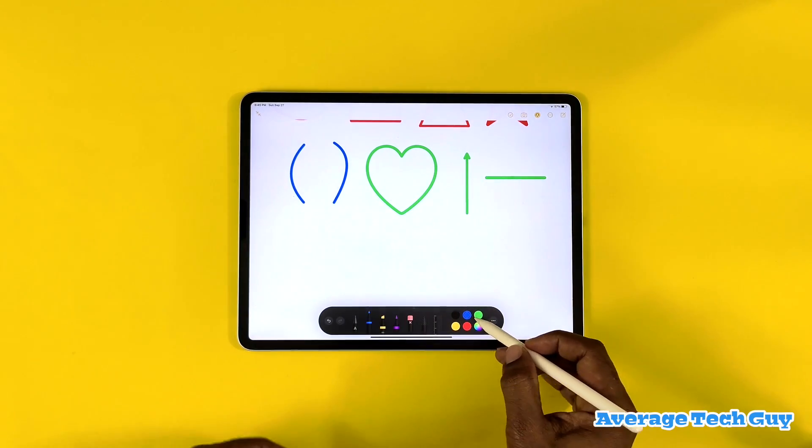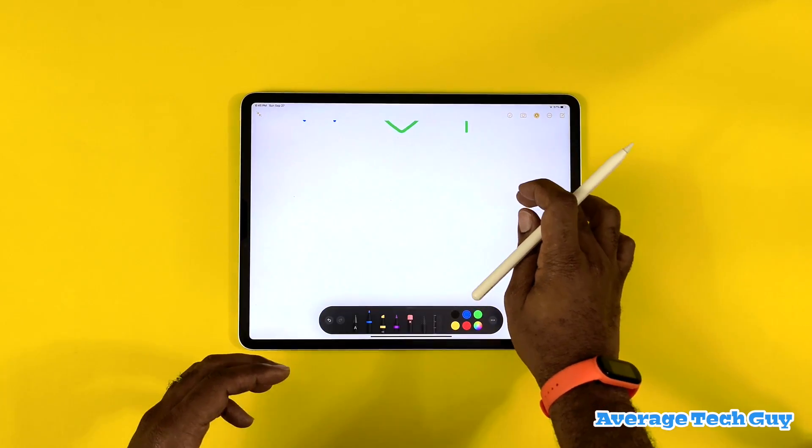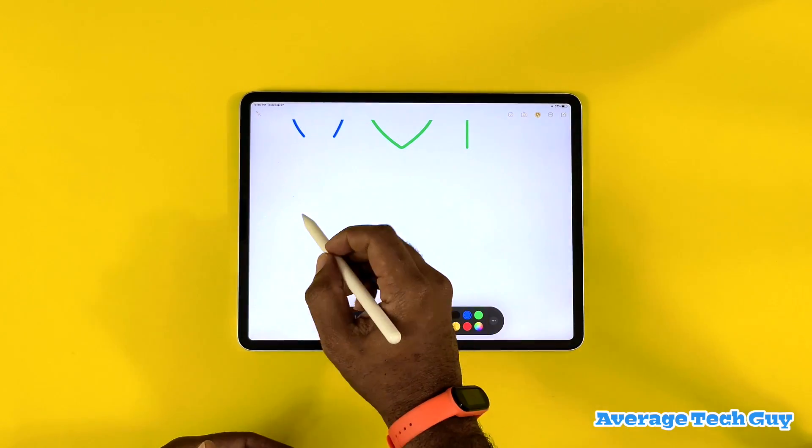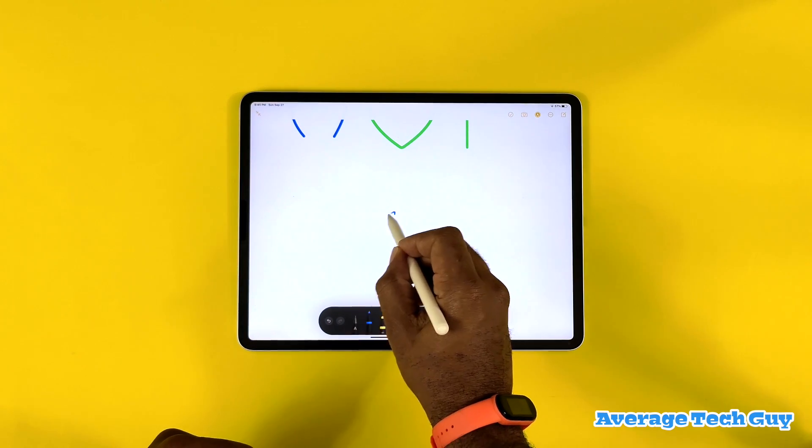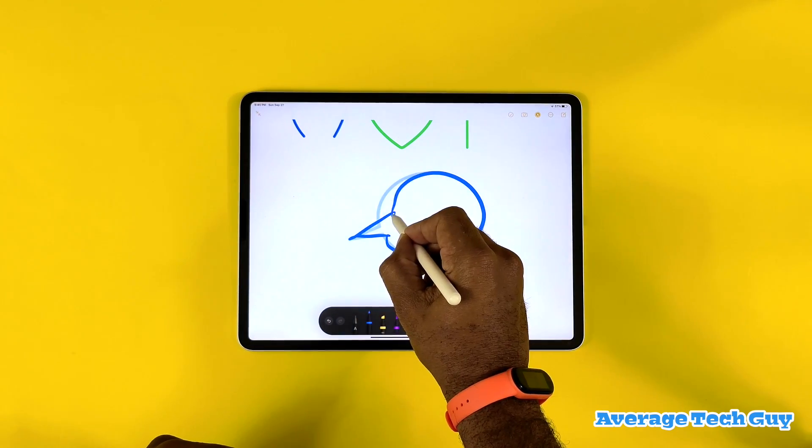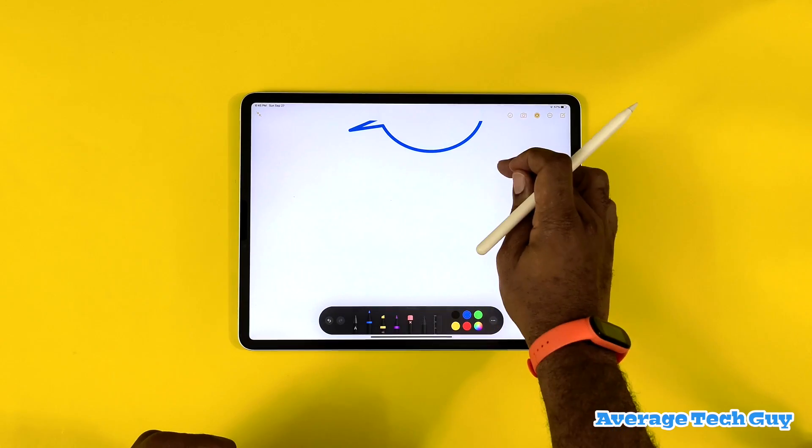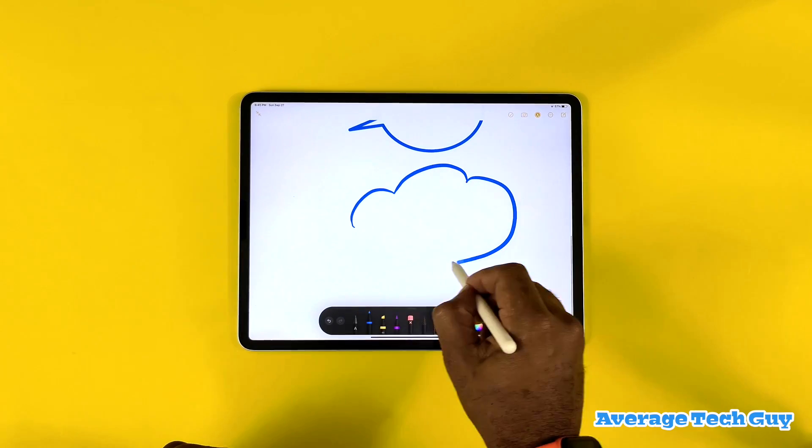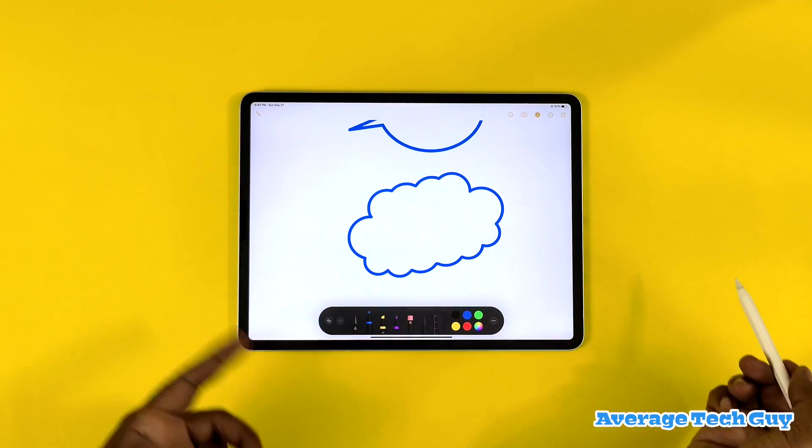Now some that you may not have thought about would be something such as a speech bubble. You can do that. Or maybe a thought bubble or a cloud, you can do that.